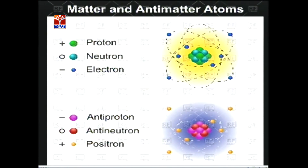If a proton is in matter, then it will become an anti-proton in antimatter. If we take a neutron in matter, that will become an anti-neutron in antimatter. The positron is nothing but a positively charged electron, discovered by Anderson.